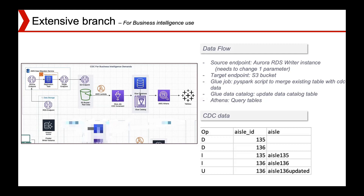Every time a CDC file comes into the S3 bucket, a Lambda function is triggered to run the Glue job, generating the latest table by merging the old table with the CDC file. The updated table is stored back to the data catalog. We can then query tables from Athena directly, or use Tableau to connect to Athena. That's the entire structure of our architecture.